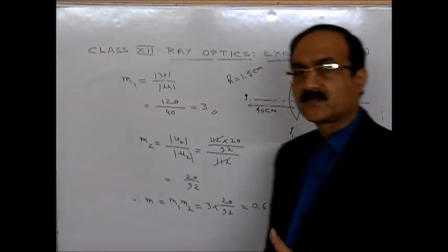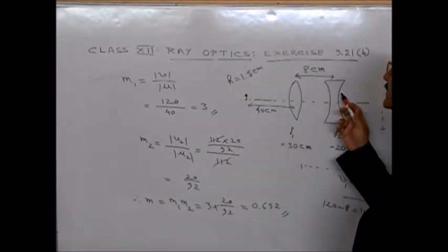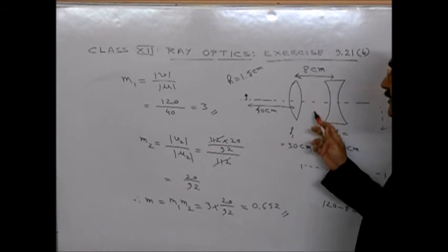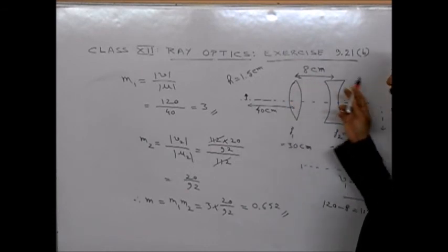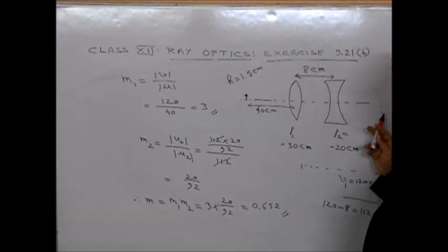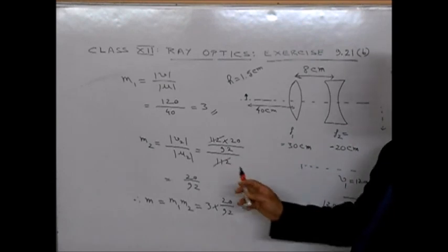So this is the technique how we do a problem involving two lenses with a separation between them. We take the first lens, find the image for that. We treat that image as virtual object for the second lens and solve it.